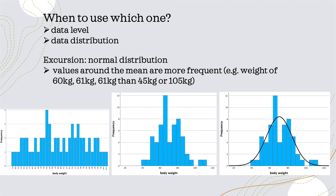If values do not follow a normal distribution, we have to kind of downgrade our discrete and continuous variables to an ordinal level. Let me explain the figures I have here first.